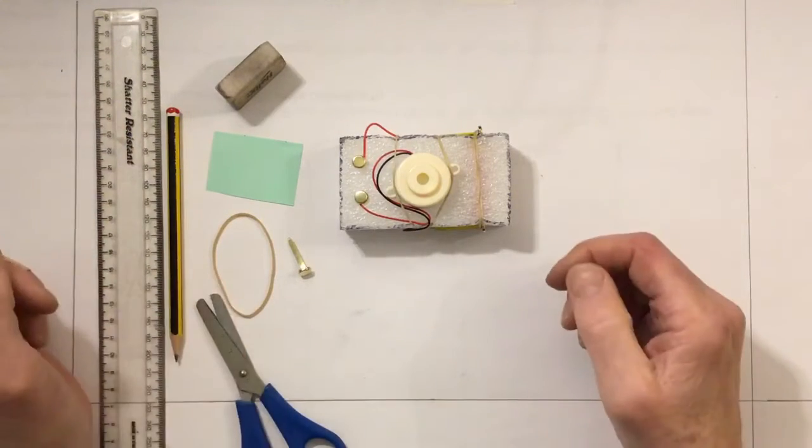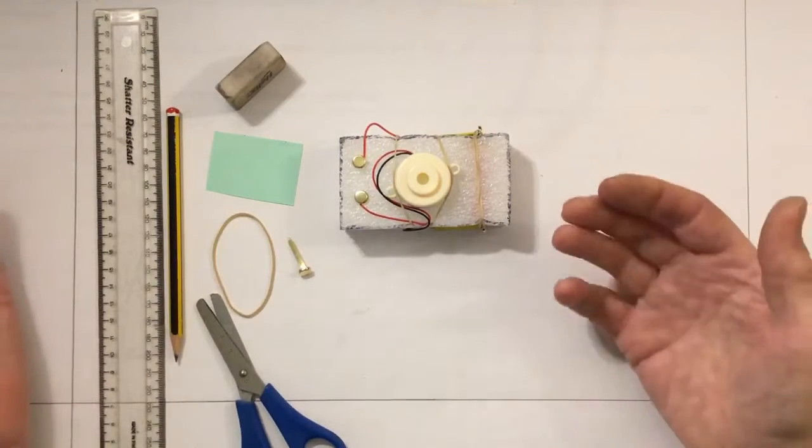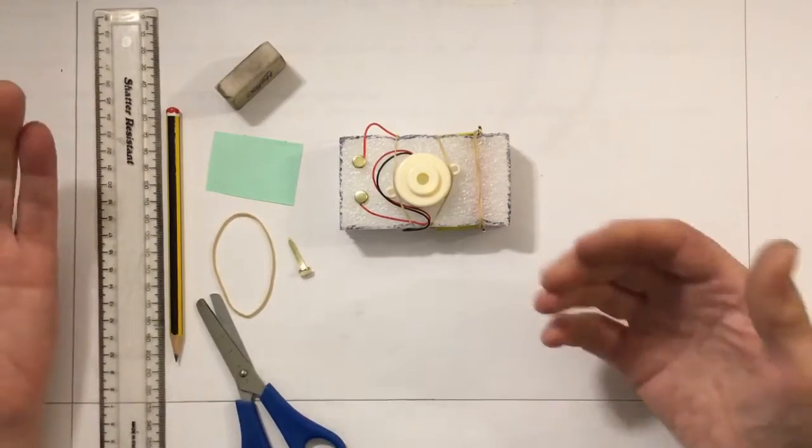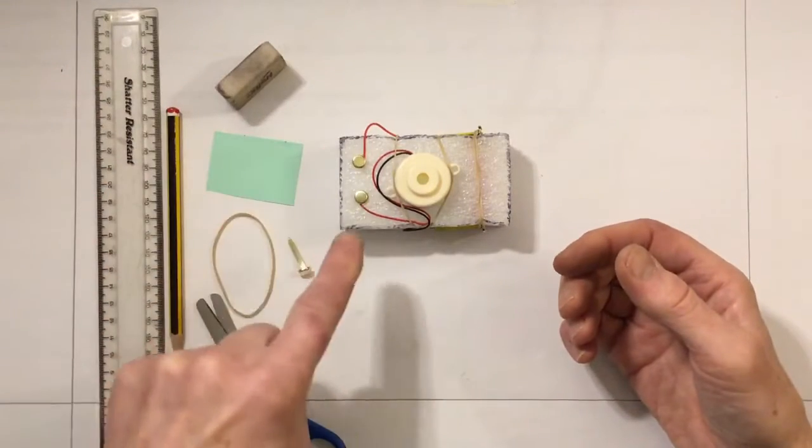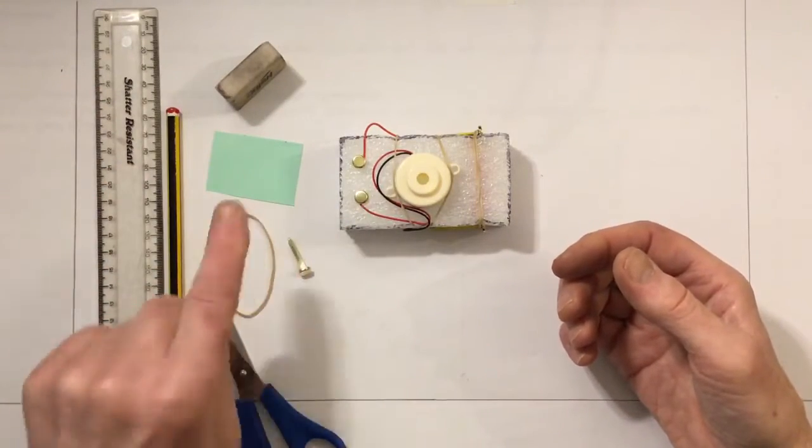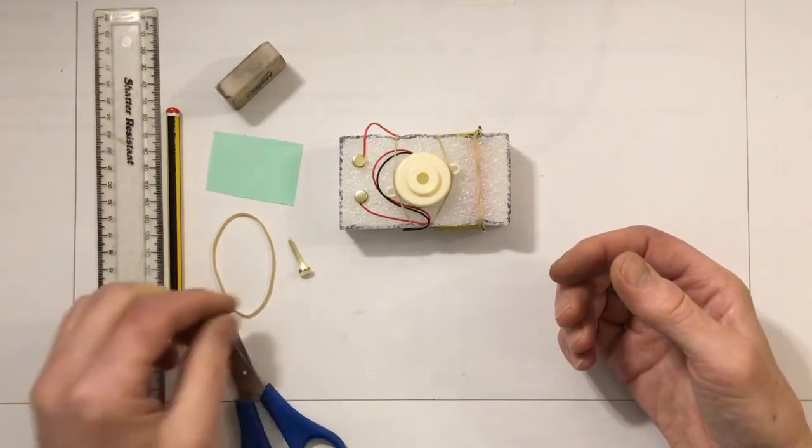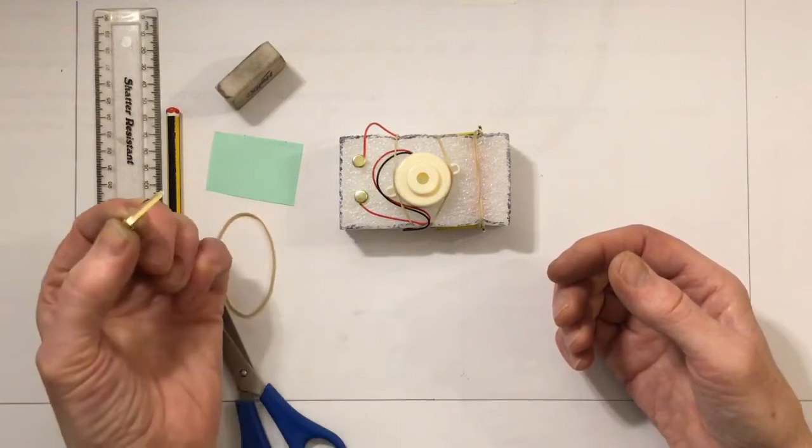We can try them in our circuit to find out if they let electricity travel through. You might want to make a prediction about which ones are going to allow the electricity to travel through and sound the buzzer. I think most people would go for a metal straight away, and there's a paper clip.